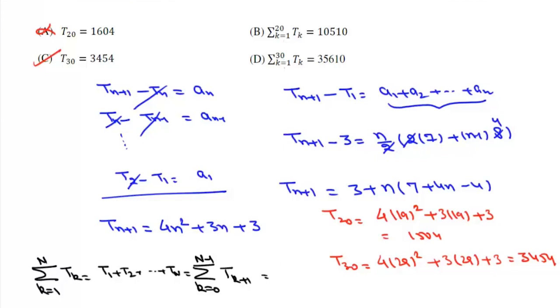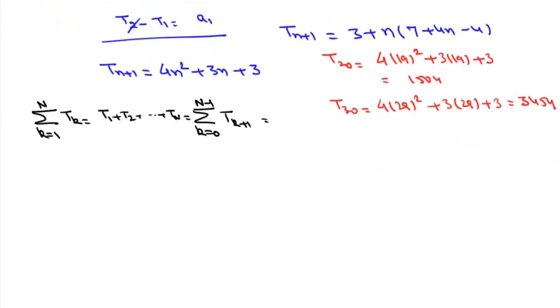This is summation from k=0 to n-1, and this is 4k² + 3k + 3.